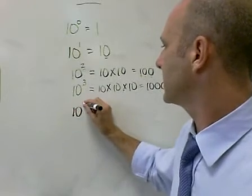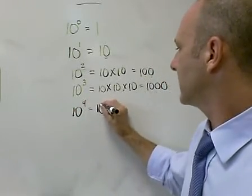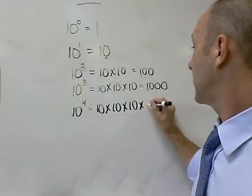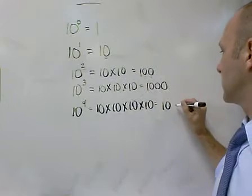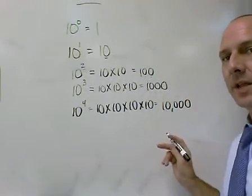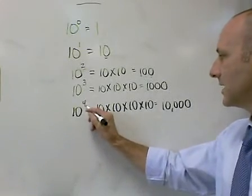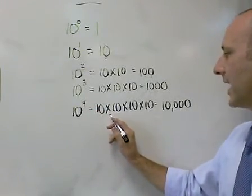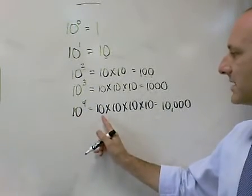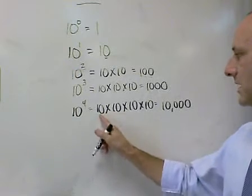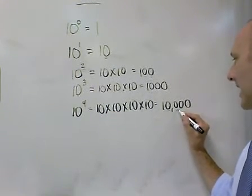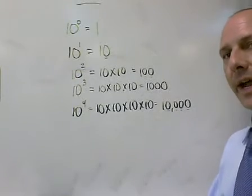Next in the pattern, 10 to the 4th — that's saying 10 times 10 times 10 times 10, which is 10,000. The pattern just moves on from there. Notice 10 to the 4th: 4 is your exponent, it's telling us we have to multiply the base by itself 4 times — 1, 2, 3, 4 — so 10 by itself 4 times. And notice that we've got 4 zeros in our answer.